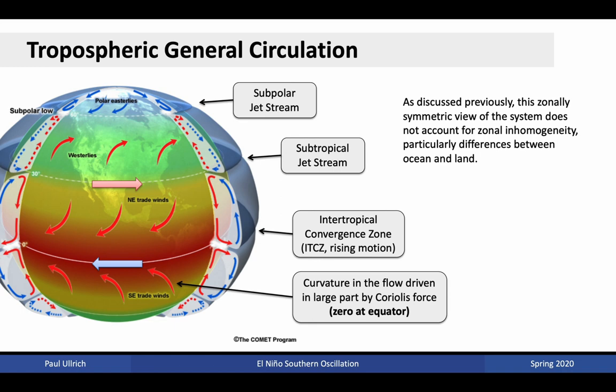Recall in our previous lectures we discussed the global general circulation. Under this general circulation, rising motion in the equatorial regions, driven by near-surface warming from solar insolation, drives convection. This convection leads to the generation of the Hadley circulation. Because of the presence of Coriolis force, the Hadley circulation cannot extend from equator to pole, but instead we end up with strong westerly jets occurring at about 30 degrees north, where the Hadley circulation subsides to the near surface. Convergence in the near surface brings air into this tropical region. In the equatorial region, the zonal flow is primarily easterly — the returning branch of the circulation brings in air that is turned to the right in the northern hemisphere and to the left in the southern hemisphere.